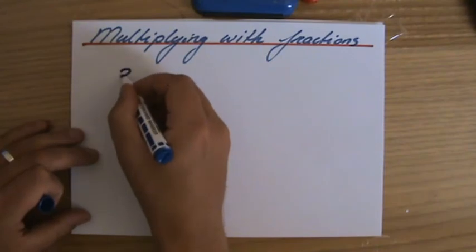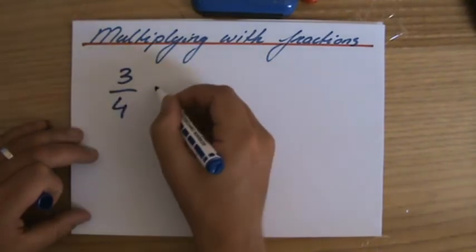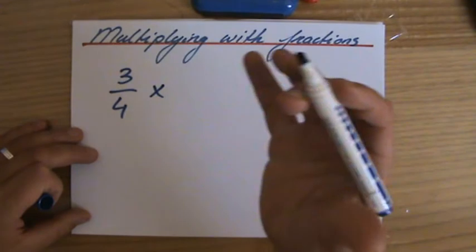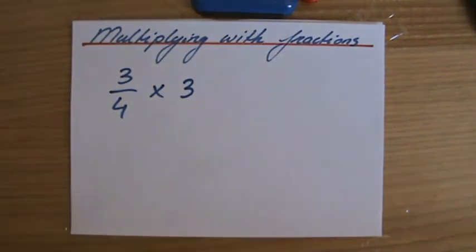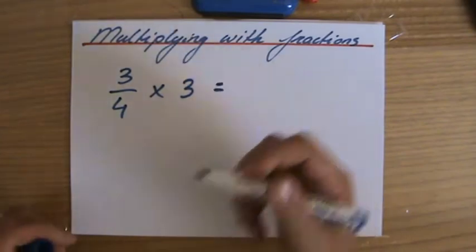Let's have a look, for instance, at 3 over 4, 3 quarters times, what shall we do? We'll do 3. 3 quarters times 3. How much does that equal to?